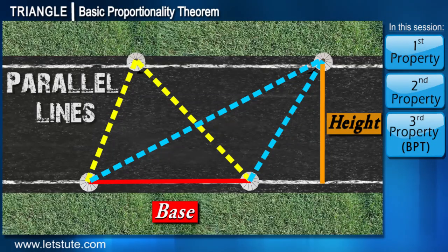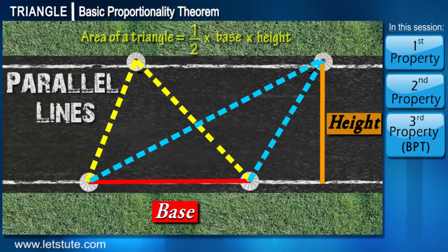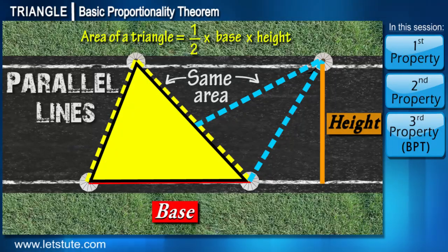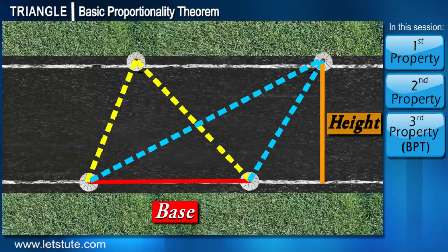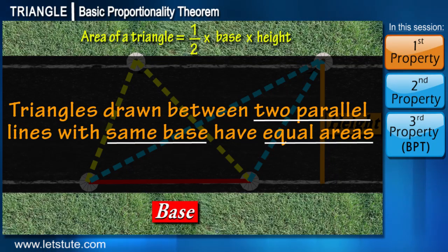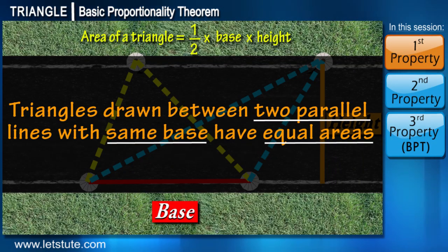When we calculate area we use the formula: half into base into height. Since height and base are equal for both triangles, their areas will also be equal. This implies: when two triangles are drawn between two parallel lines with the same base, their areas are equal.